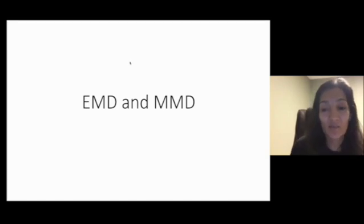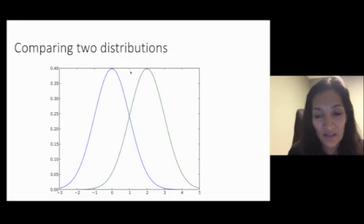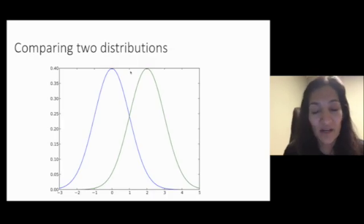Today we're going to talk about more sophisticated ways of comparing probability distributions. Let's think about the problem of comparing these two one-dimensional distributions. Let's call them P and Q.